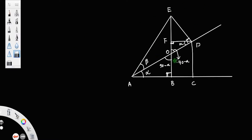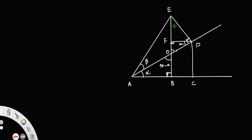We do not need this angle. So that angle will be alpha. Similarly, for the right triangle EDO, if this one is 90 minus alpha and this one is 90 minus alpha, this angle will be alpha. So if this is alpha, this angle is alpha, and also this angle is also alpha.